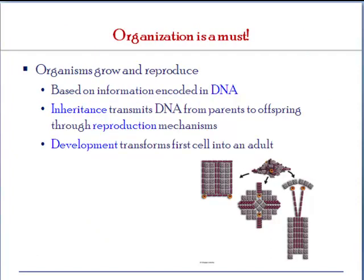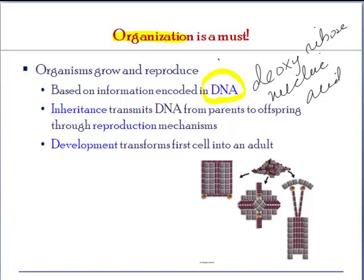Organization is present in the genetic code. The genetic code is present in what is called DNA — Deoxyribose Nucleic Acid. This is the code of life and contains all the information on what an organism should be: what reactions it will undergo, its outside appearance, and even what diseases it may carry. DNA is inherited from parents to offspring, so it is an inherited code of life.